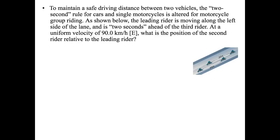To maintain a safe driving distance, the two-second rule for cars is altered for motorcycle group riding. The leading rider moves along the left side of the lane and is two seconds ahead of the third rider at a uniform velocity of 90.0 kilometers per hour east. What is the position of the second rider relative to the leading rider? We know time is 2 seconds and velocity is 90.0 kilometers per hour.